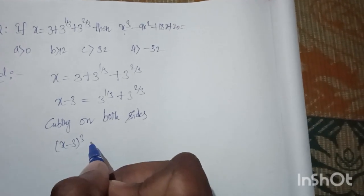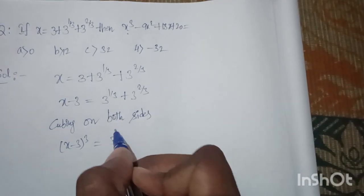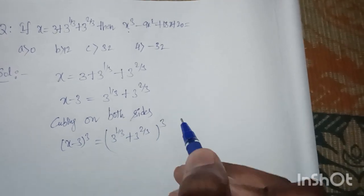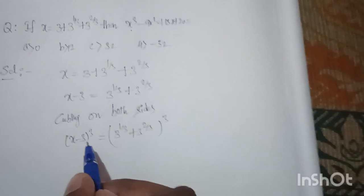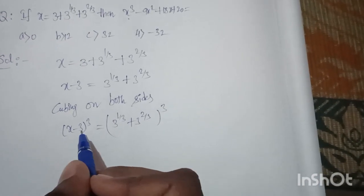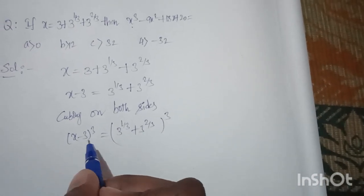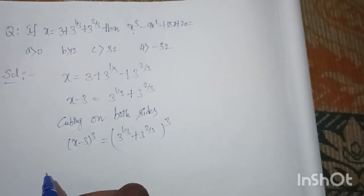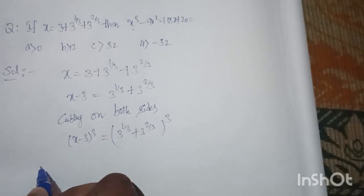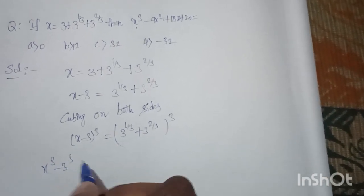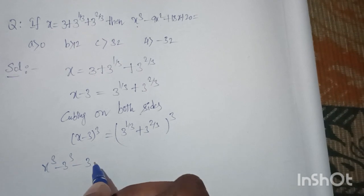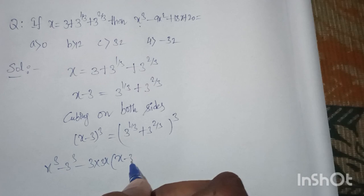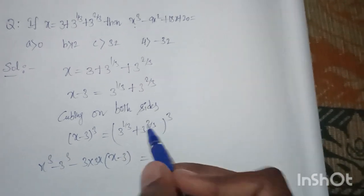So (x - 3)³ = (3^(1/3) + 3^(2/3))³. On the LHS, using the (a - b)³ formula — which is a³ - b³ - 3ab(a - b) — we get x³ - 3³ - 3·(3·x)·(x - 3), which expands to x³ - 27 - 9x(x - 3).